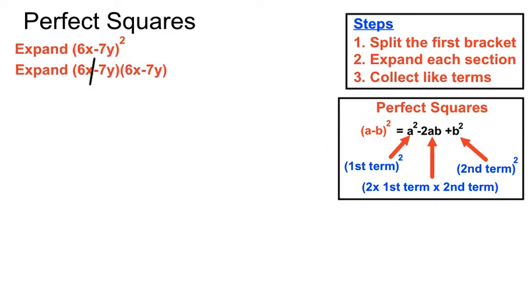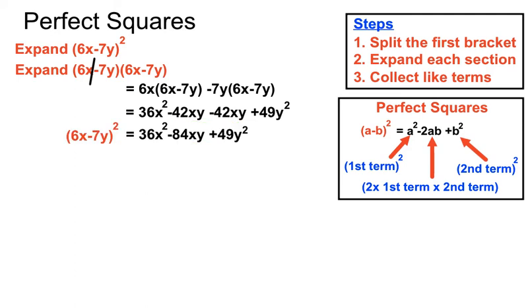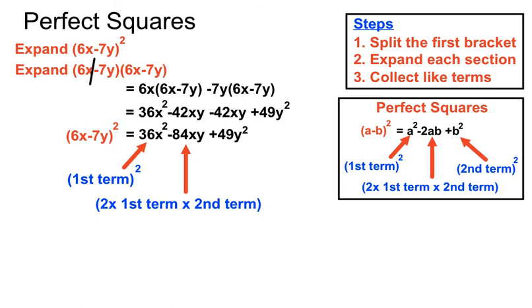Here's a more complex example with numbers and letters beside each other. Splitting the front term when we square those brackets and joining like terms: the first term 6x squared gives 36x squared, minus two lots of 6x times 7y gives minus 84xy, and the last term minus 7y times minus 7y — minus times minus makes a plus — gives plus 49y squared. So whether you do it the long way or the short way, you get the same result.